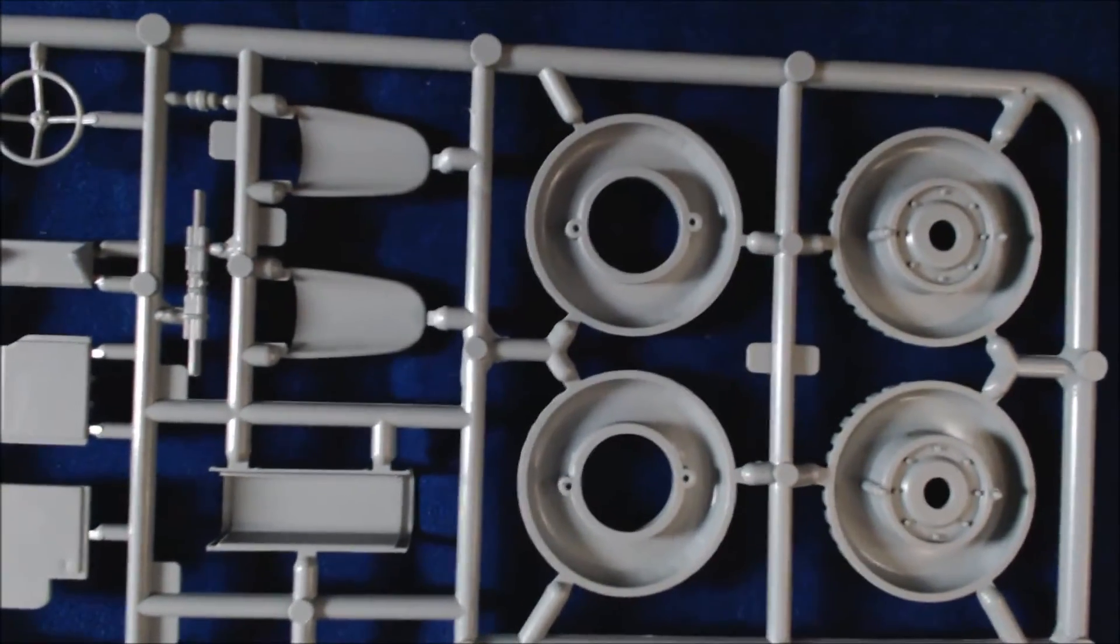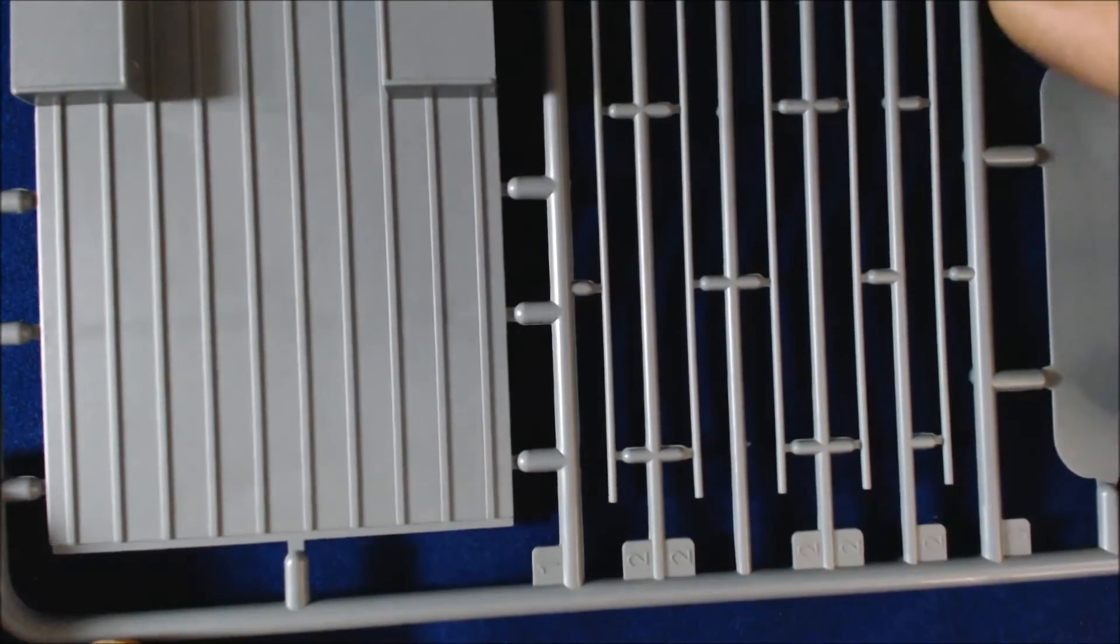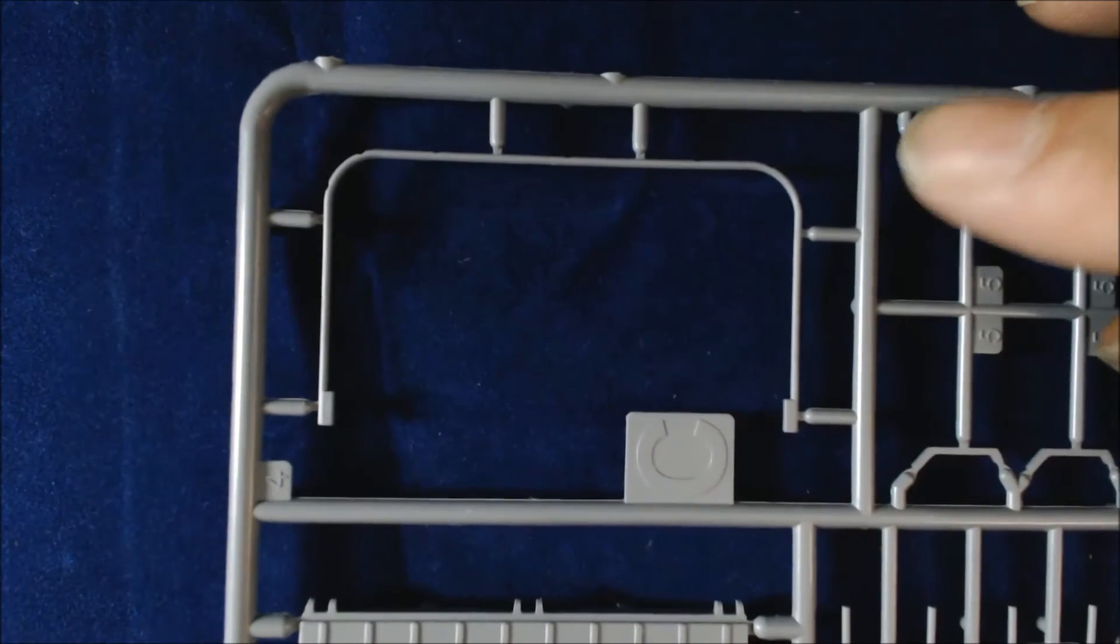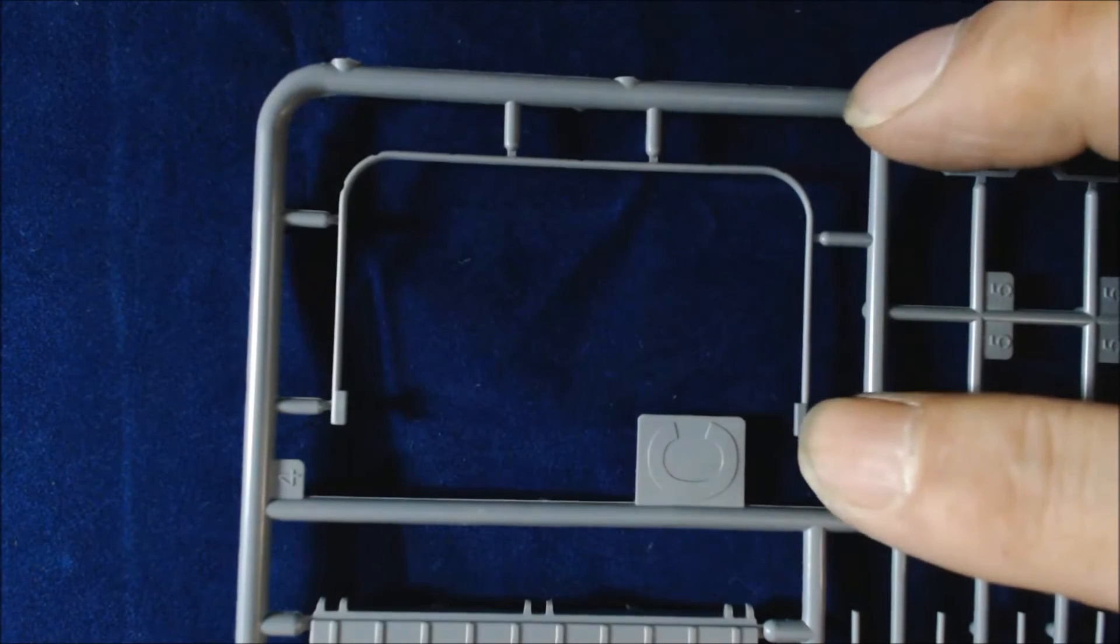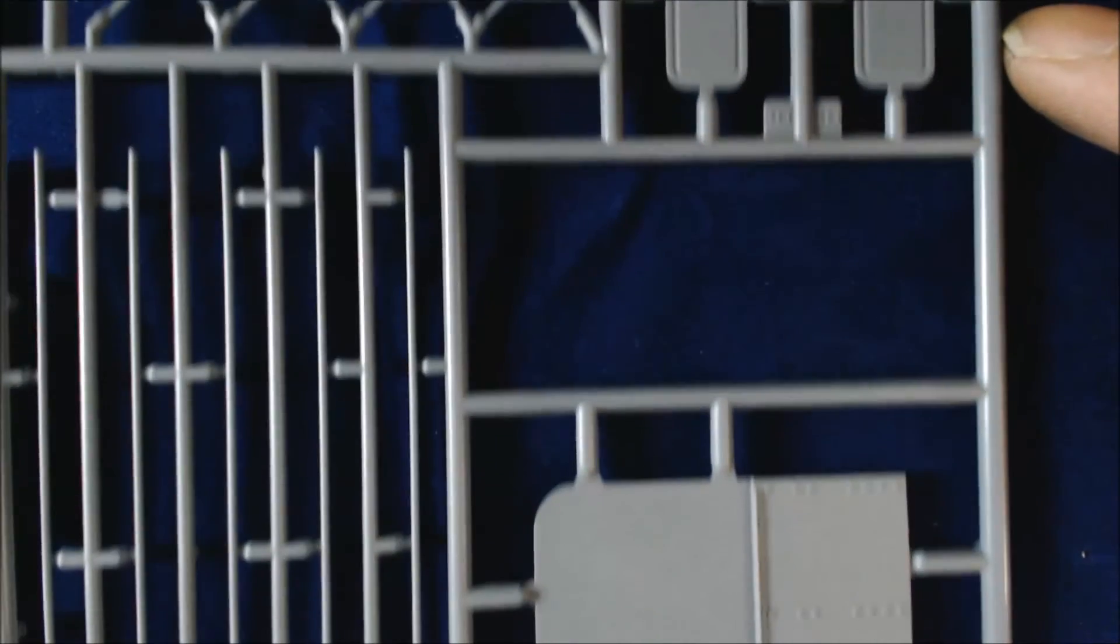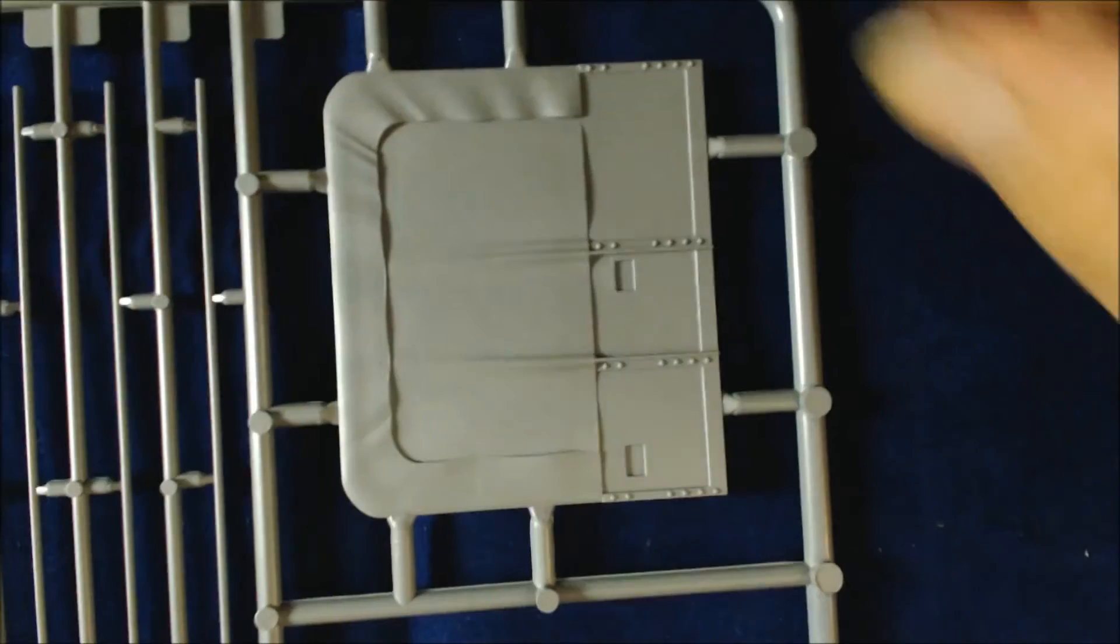There's nothing there to really report except for just nice clean parts, which I'm always happy about. You start with the back deck, these are all your little tubes to make the back racking with the canvas. If you get a nice pair of sharp sprue cutters or side cutters, you can cut these and they don't fracture.